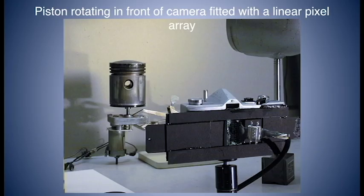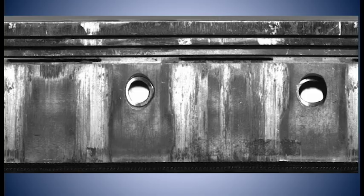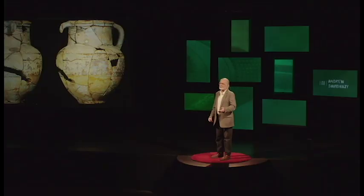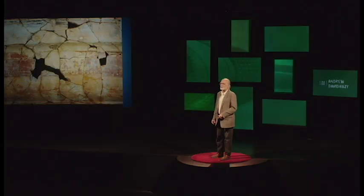Now, if you rotate an object in front of the camera, such as a piston, you make a peripheral, a roll-out photograph, such as this one. Or, if a piston is too mundane for you, in that case, you could take an archaeological object, such as these pottery or vases that are being reassembled, and then show them in one flat sheet, such as this.